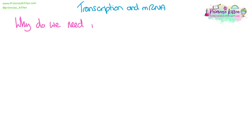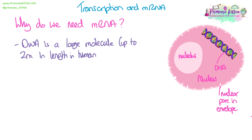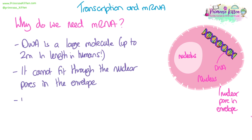Transcription and mRNA. First of all, let's start by looking at why do we need mRNA? DNA is a really large molecule — it's up to about two meters in length in a human nucleus. So if you took the DNA out of the nucleus of every cell, each bit of DNA would be about two meters long if you stretched out, uncoiled and untwisted it. It can't fit through the nuclear pores in the envelope around the nucleus — it's just too long, and if it's condensed it's too large.